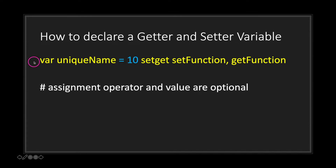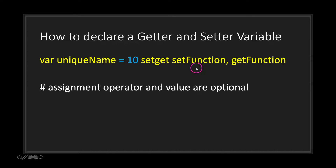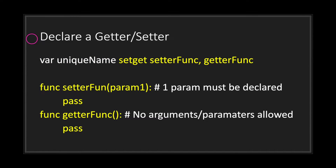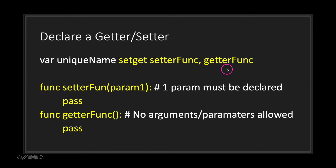To declare a getter and setter variable you have to use the setget keyword. You don't have to assign a value to your variable. However, to create a getter and setter, simply use the setget keyword followed by — and this order is important — the name of your setter function that has to be declared, and a getter function that has to be declared. Keep in mind, when setting the names of the setter and getter functions, you must declare a function with those names in your class.